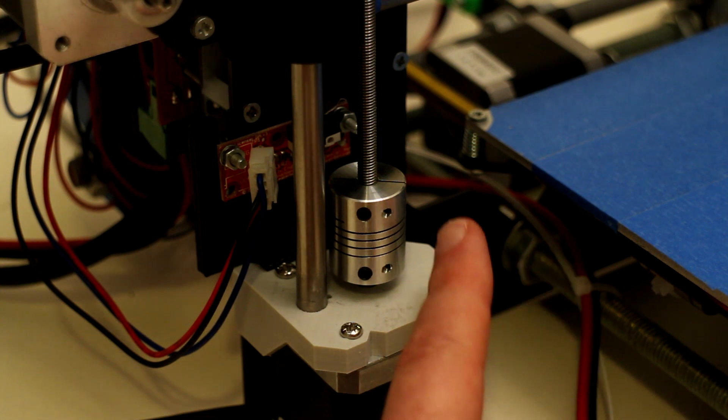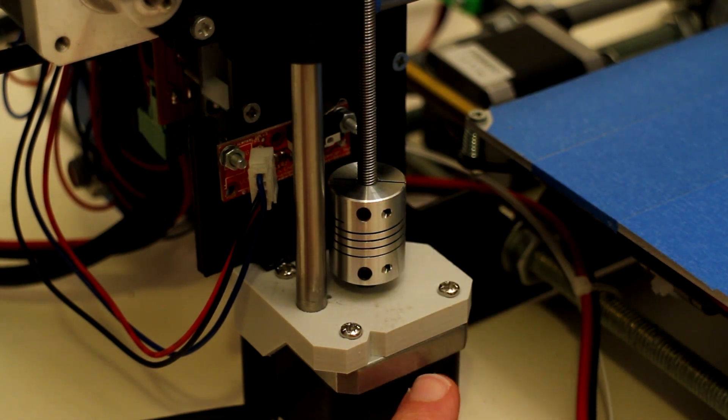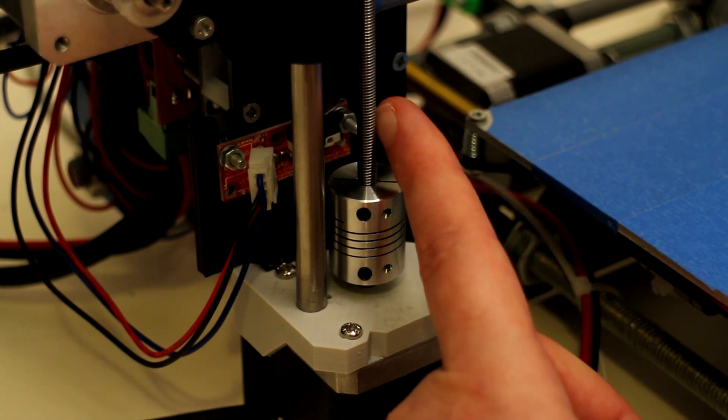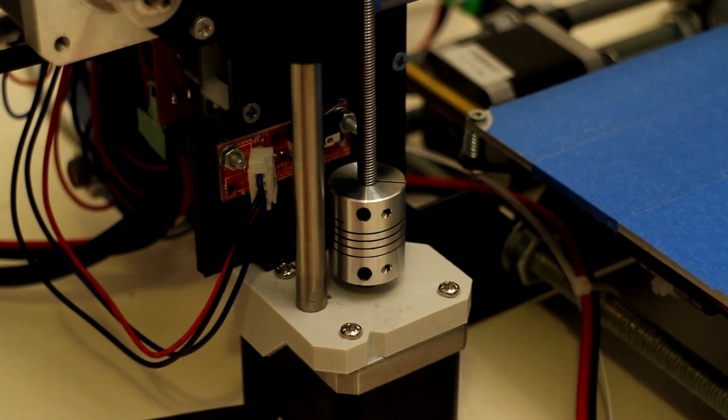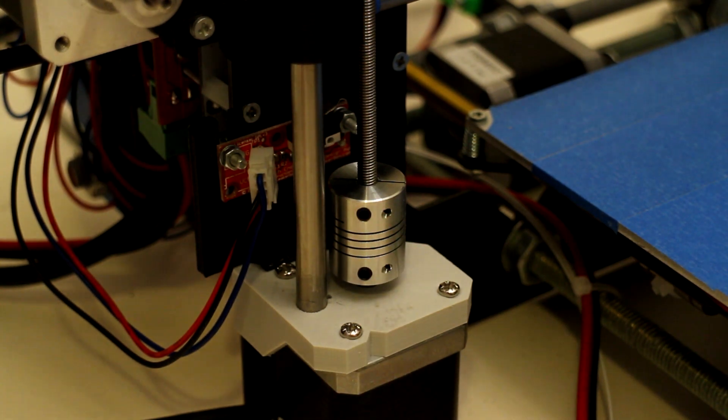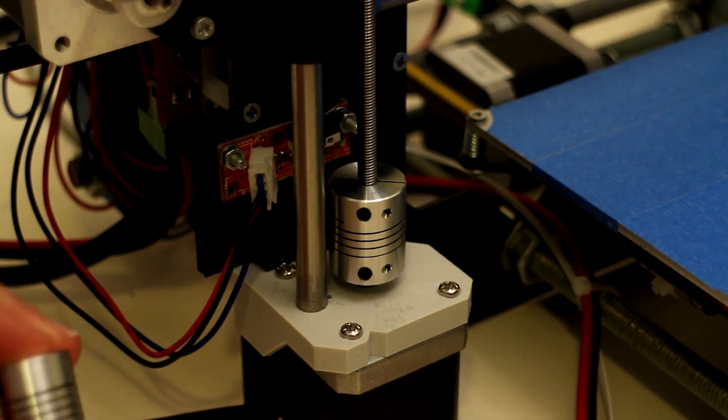Next up we have the shaft coupler. The job of the shaft coupler is to attach the shaft of the stepper motor to the M5 threaded rod. These shaft couplers have a spring in the center of them which allows any offset between the shafts to be absorbed within the springiness of the coupler.